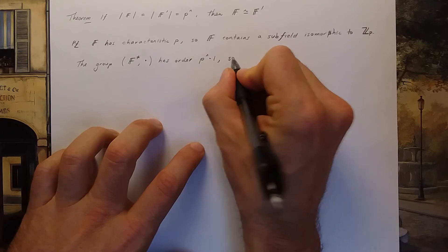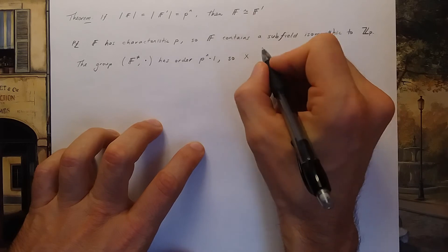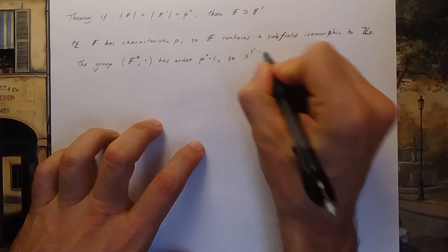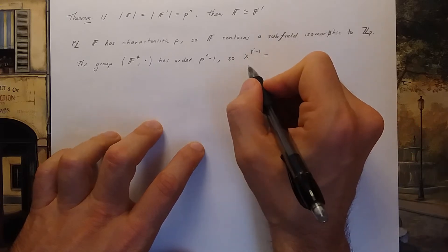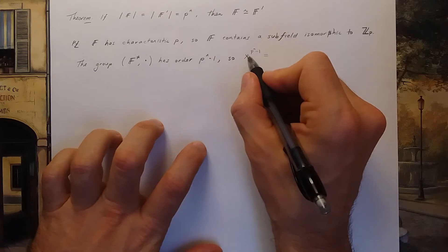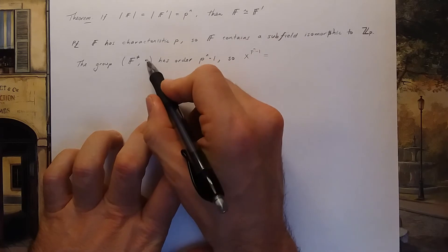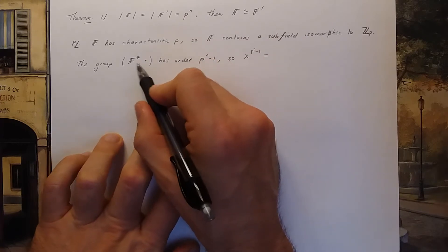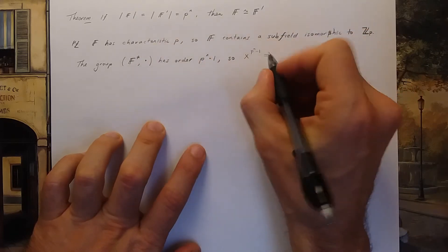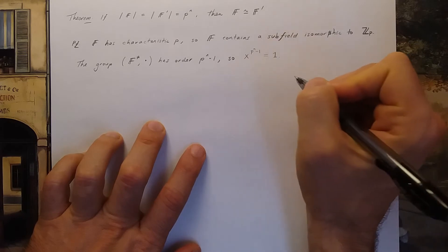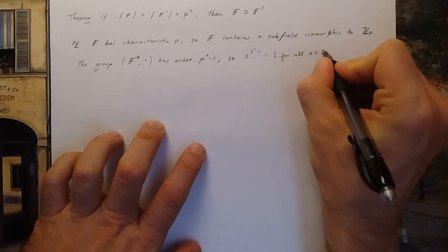So this group has order p to the n minus one because I threw away the single element zero. And that means that if I take any element in the group x and raise it to the size of the group I get the identity. So we saw this fact last quarter in group theory that if you take an element in the group and raise it to the size of the finite group you get the identity. In this case since we're thinking about the group as the operation multiplication from the field the identity is the multiplicative identity in the field. In other words, one. And that's got to be true for all elements x in the field.